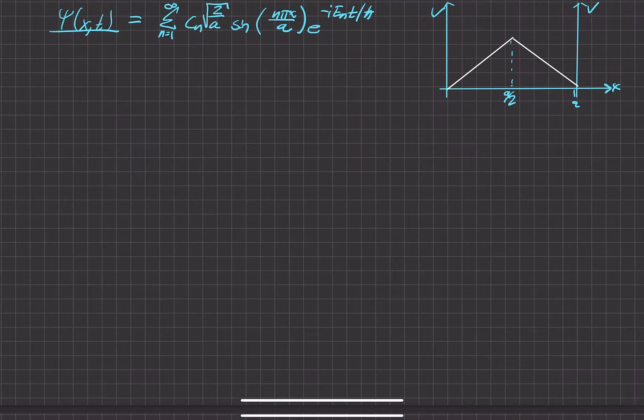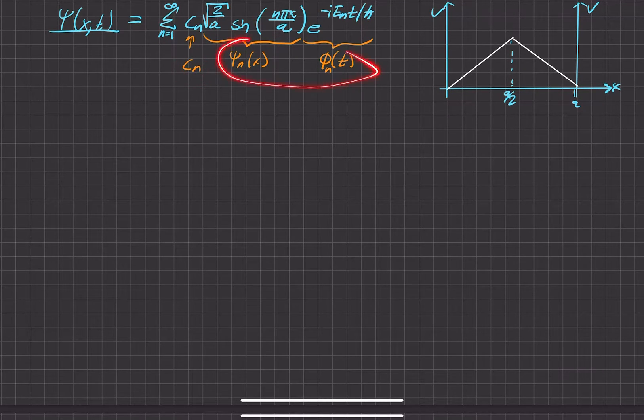So each one of them having a different spatial component, psi sub n of x, and a different time component, phi of t sub n. Each one of these has a corresponding coefficient which dials up or down how much of these states are represented in this wave function. Since we have all this information for our infinite square well, we need to solve for this coefficient c sub n.